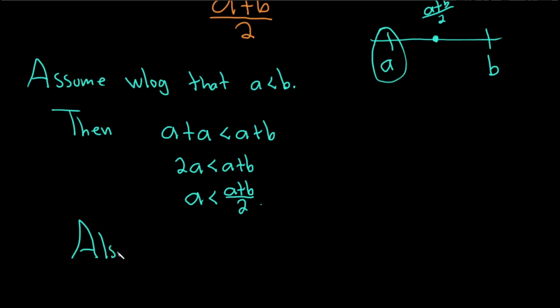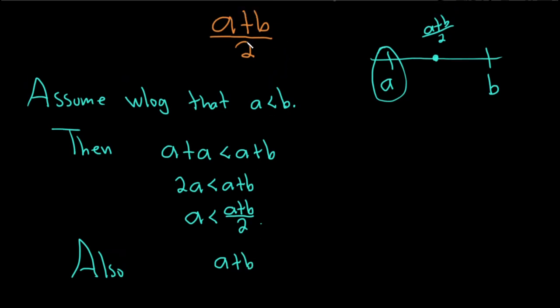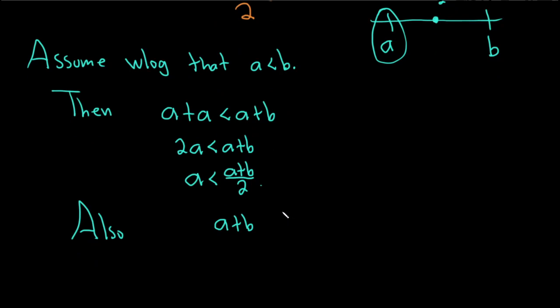If we have A plus B, let's focus on the numerator. A is less than B, so this is less than B plus B, which is 2B. Divide by 2: